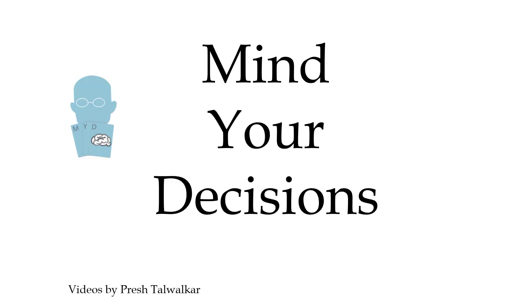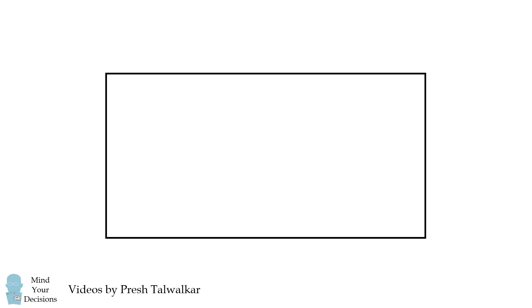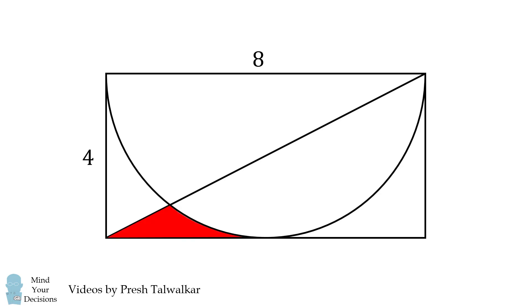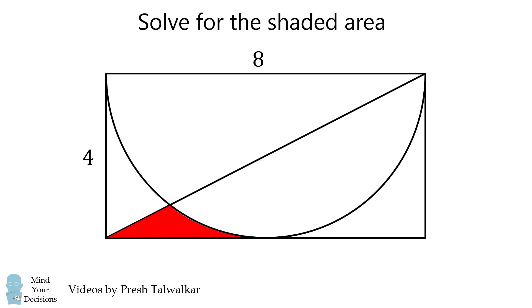Hey, this is Presh Talwalkar reminding you to mind your decisions. Start with the rectangle whose sides are 4 and 8. Draw a semicircle along the longer side of the rectangle and now connect a diagonal of the rectangle. What is the area of this shape shown in red?